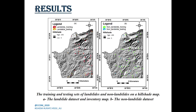40 landslide polygons were used as the training set for statistical analysis, and 17 landslide polygons were used as the testing set for validating the resulting susceptibility map. The same procedure was done for the non-landslide data set, which was prepared with the same size as the landslide data set.